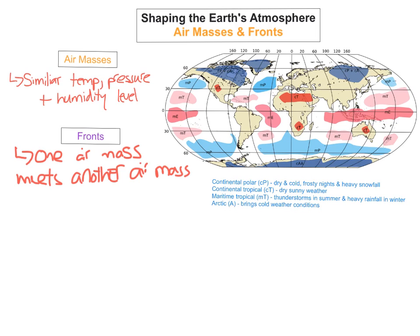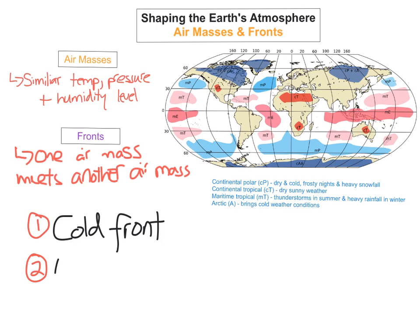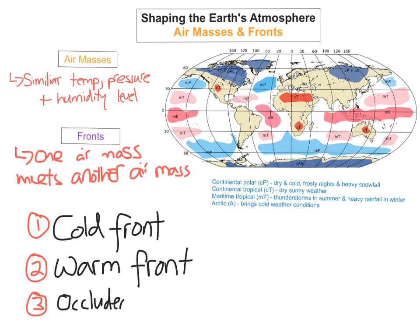With fronts you've got three different types. The first one is called a cold front, the second one is called a warm front, and the third one is called an occluded front. For your junior state exam you need to know each of these different types of fronts.